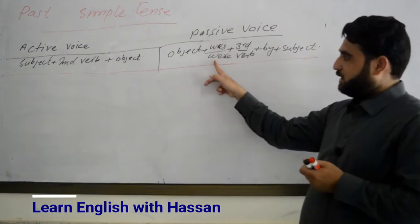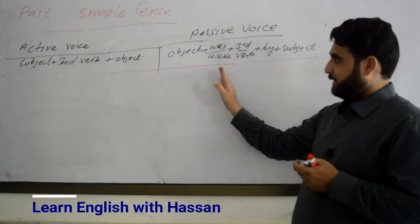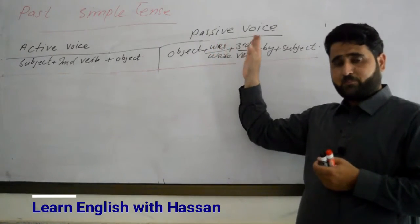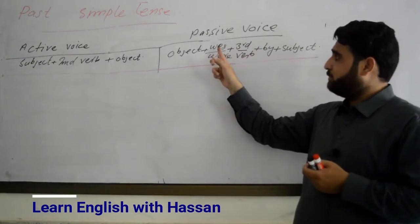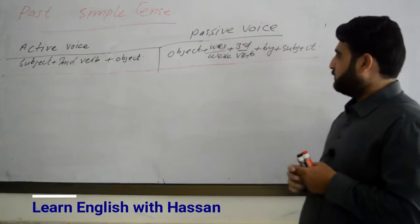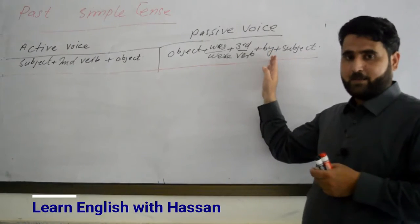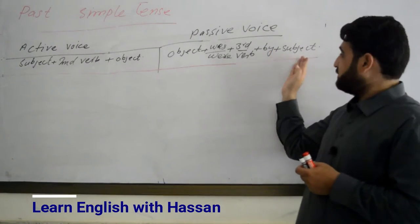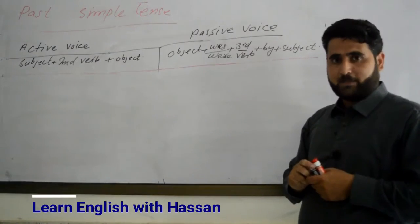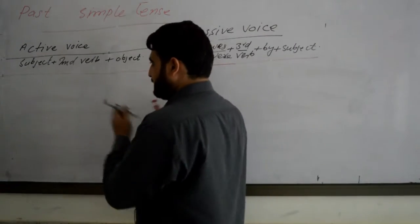तीसरा — Active में Auxiliary Verb नहीं है, लेकिन Passive में Was और Were लगेगा. Singular Noun के साथ اور I के साथ हम Was लगाएंगे, और बाकी के साथ Were लगाएंगे. Last Step यह है कि Object के पहले By लगेगा. तो चलिए एक Example Sentence से शुरू लेते हैं.